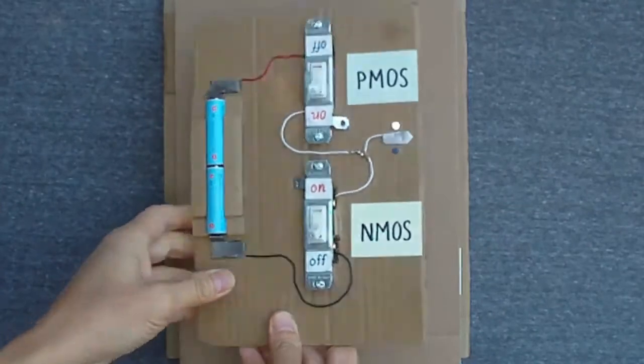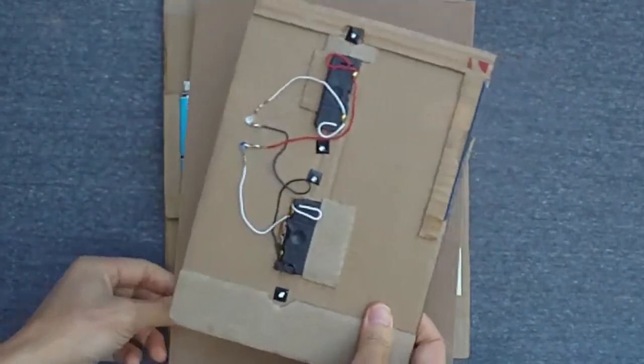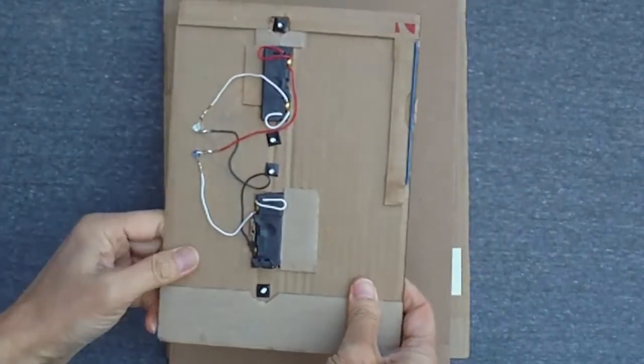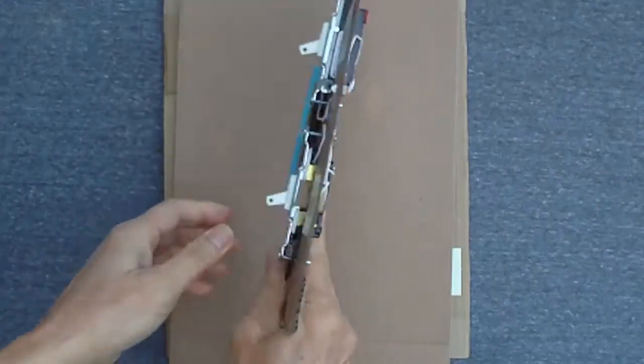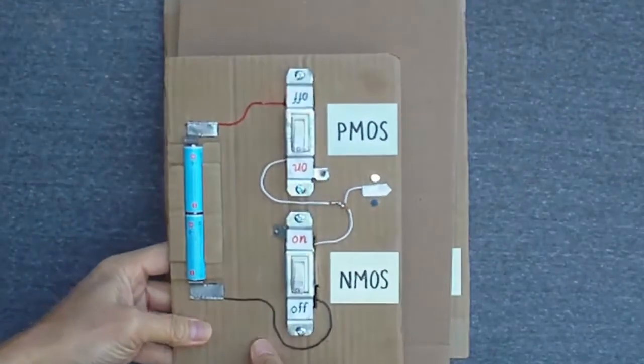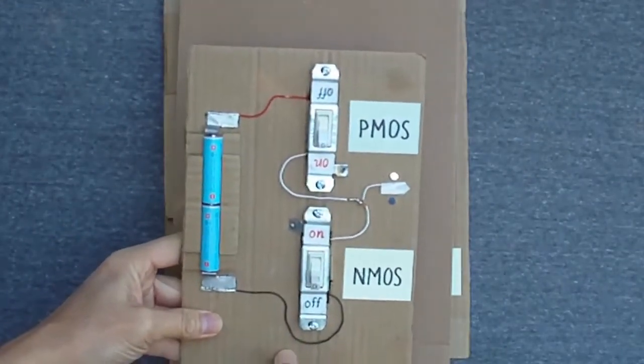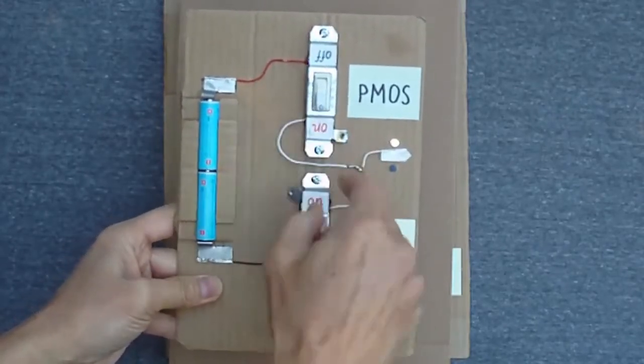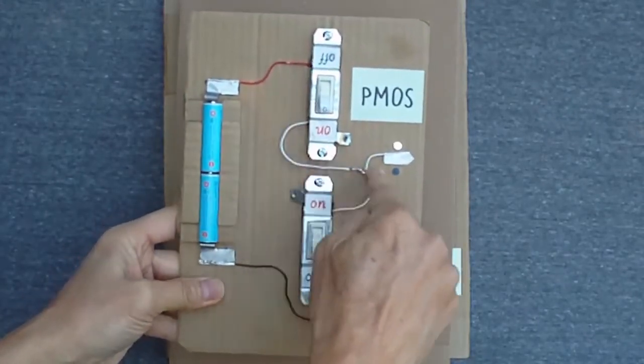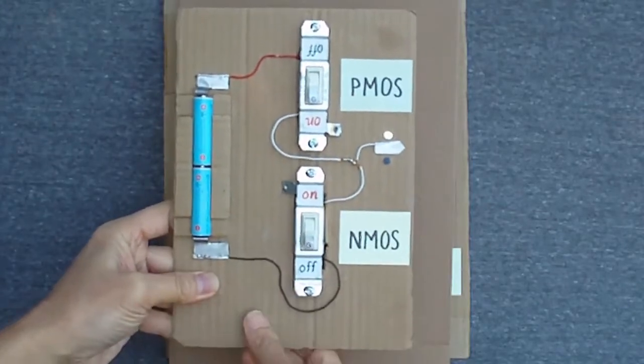There are some extra wires in back to make the LEDs light up, but they are not part of the CMOS model. I need to avoid turning on both switches at the same time because it would short-circuit the power supply and ground. This would quickly drain the battery and generate a lot of heat from the high current.